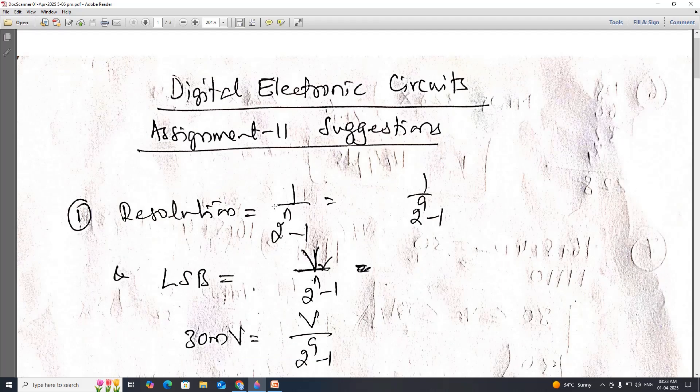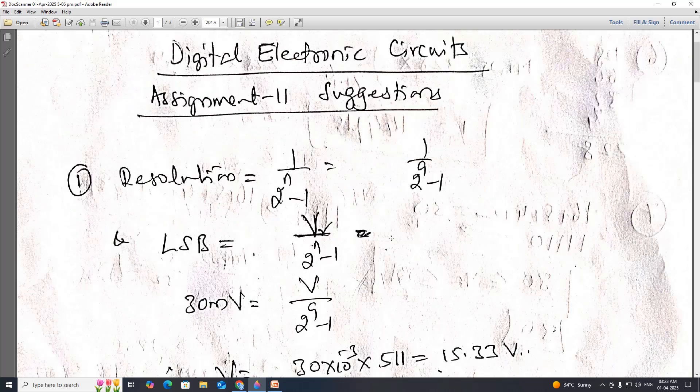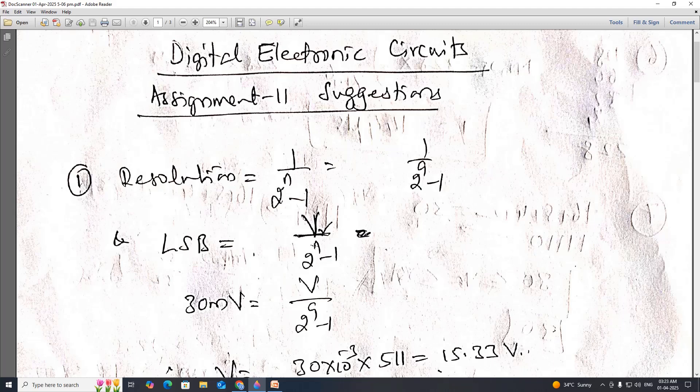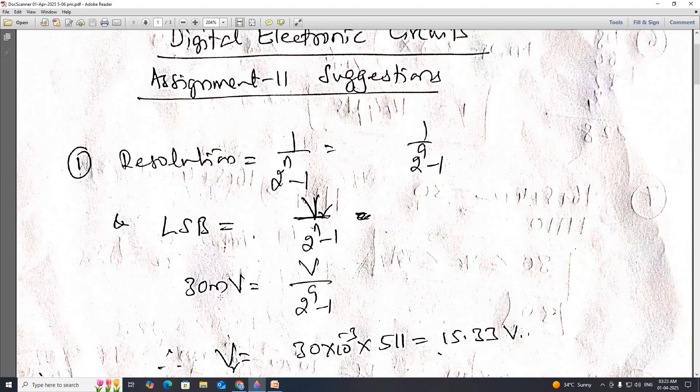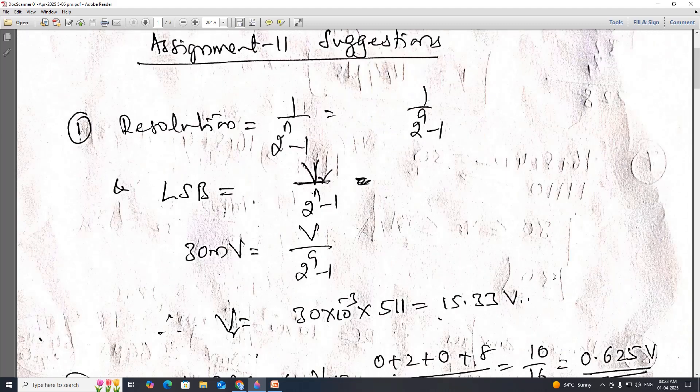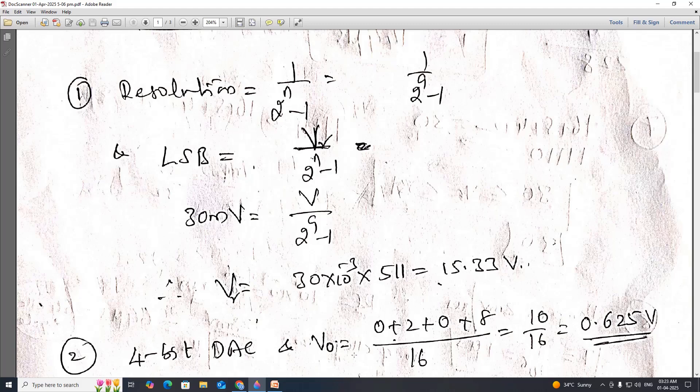So resolution is 1 divided by 2 power n minus 1, which is nothing but 1 divided by 2 power 9 minus 1. LSB is equal to V reference by 2 power n minus 1, which is equal to 30mV divided by 2 power 9 minus 1, so we will get this as 15.33V.